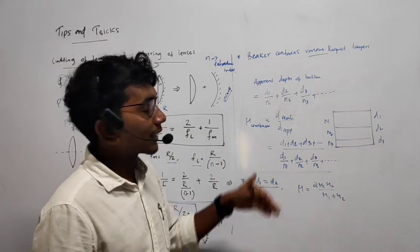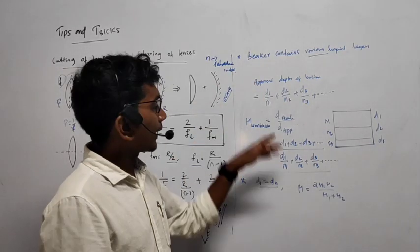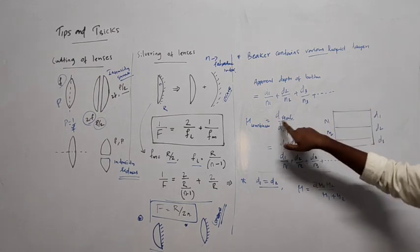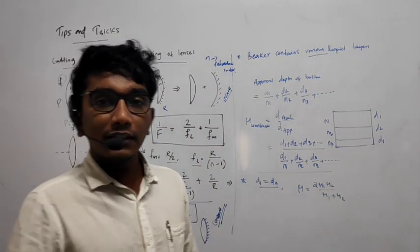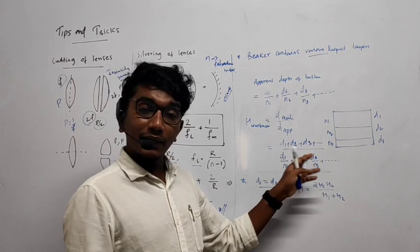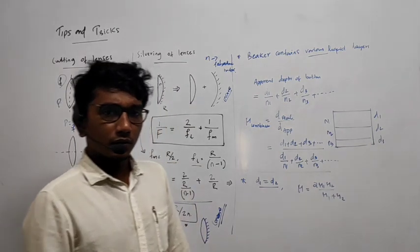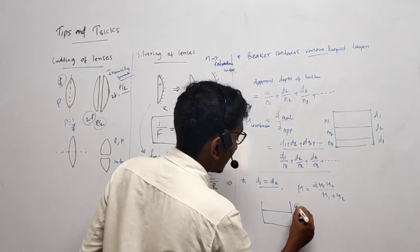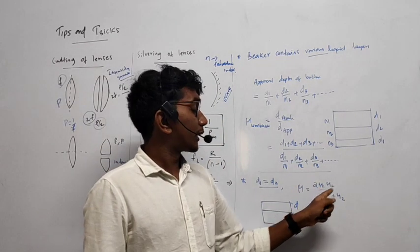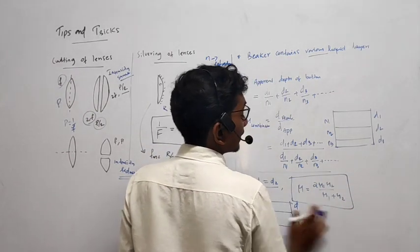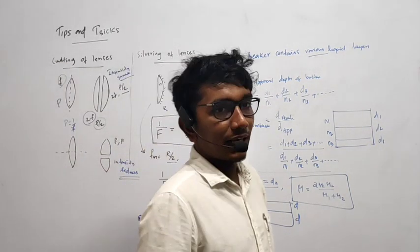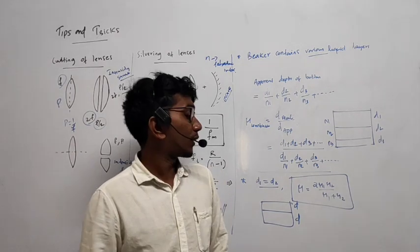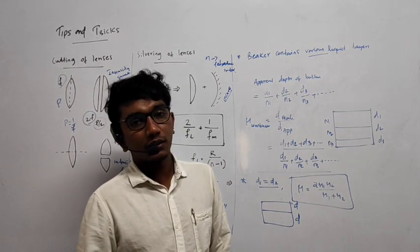We know that d/n gives apparent depth for a single layer. Now considering the whole combination, the effective refractive index equals total real depth (d1+d2+d3+…) divided by total apparent depth (d1/n1 + d2/n2 + …). Furthermore, if d1 = d2 = d, the combined refractive index simplifies to 2·mu1·mu2 / (mu1 + mu2) — a formula we've seen in average speed and resistance/capacitor problems as well.